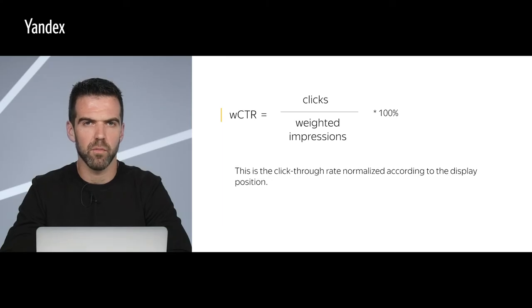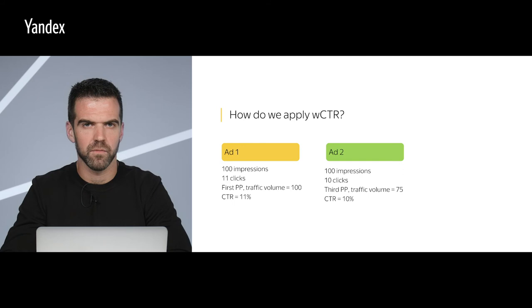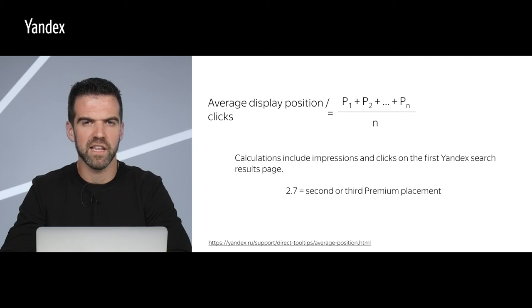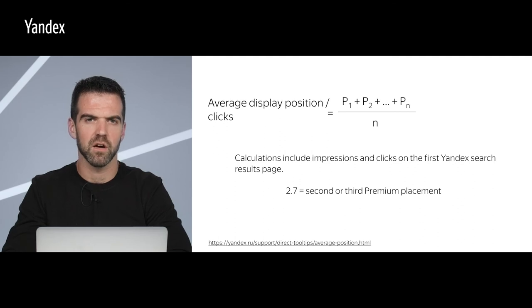Weighted CTR is the click-through rate normalized for the display position. By using this formula, we can compare two ads' CTR. There's one more indicator we've had for a while — average display position. As before, you can still see at any moment in which position on average your ad was served. When calculating the average position, impressions and clicks in ad blocks on the first page of Yandex search results are taken into account. For example, a value of 2.7 means that the ad was more likely to appear in second or third place premium placement.